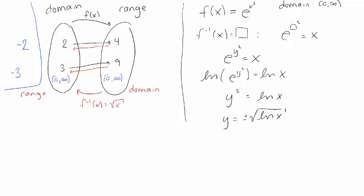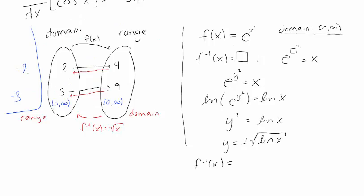So that means my domain of f(x) is my range of f inverse. So f inverse of x is going to be this y, this positive or negative natural log. But since it should be only non-negative numbers, it's actually just the positive square root.